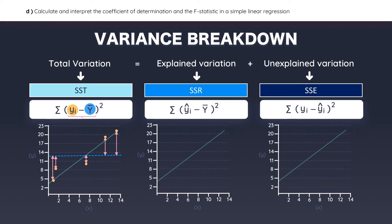The sum of squares regression is slightly different because it is based on the Y values estimated by the regression line and the average Y value. It focuses on the differences between the estimated Y values found on the regression line and the average. You must square each difference and add them together to find the sum of squares regression. The sum of squares error focuses on the residuals — the difference between the actual and the estimated Y values.